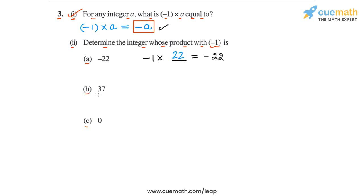So we write the statement: (-1) × ___ = 37. So what integer will go into the blank? Well, the correct integer will be the negative of 37, which is -37. So we will put -37 here because (-1) × (-37) = 37. And then in part c we have the integer 0.